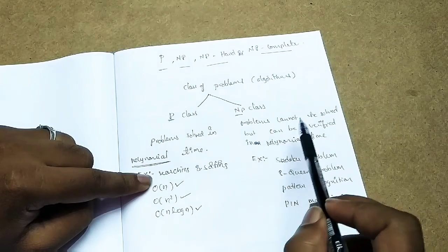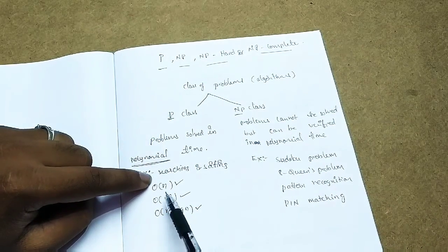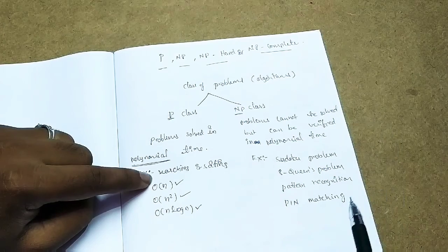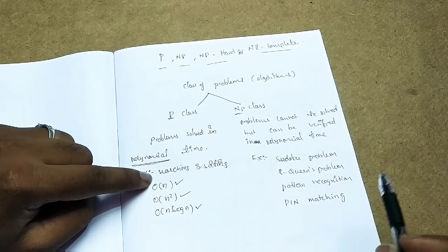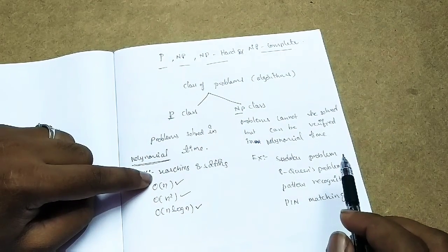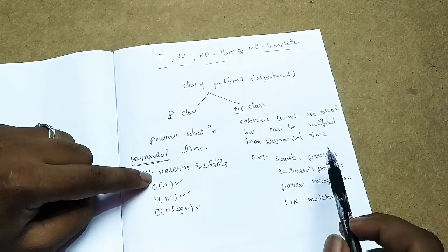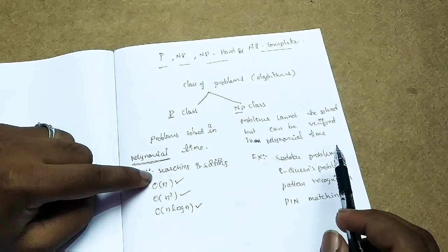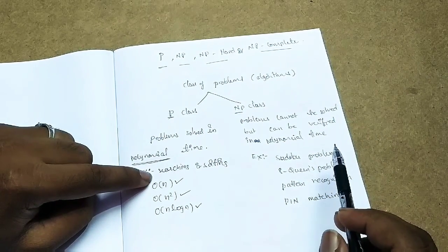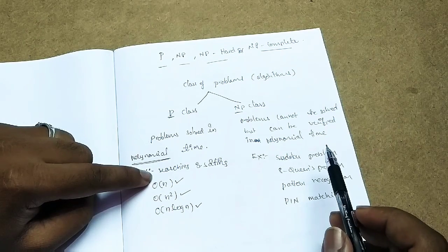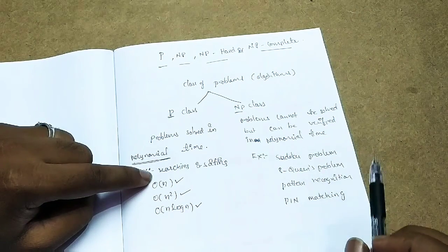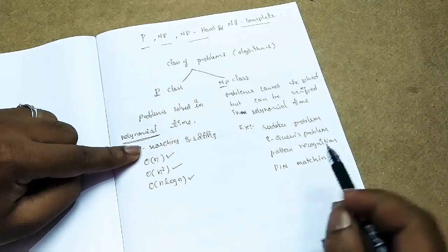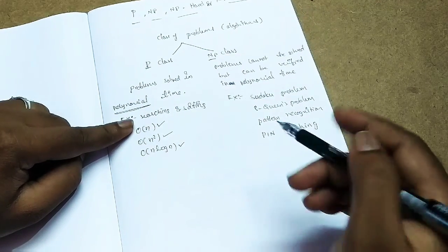Problems cannot be solved in polynomial time — whether that is N squared, N cubed, or N log N — but I can verify the solution in polynomial time. I can verify the algorithm, but I do not have to solve it from scratch. Let's take a simple, easy example.